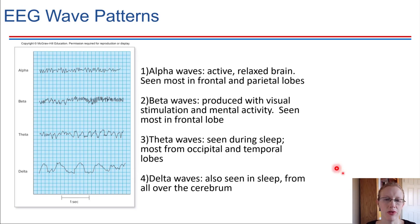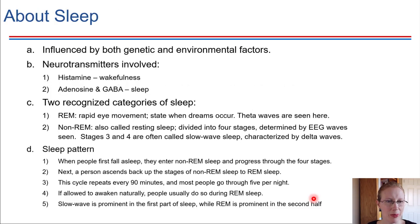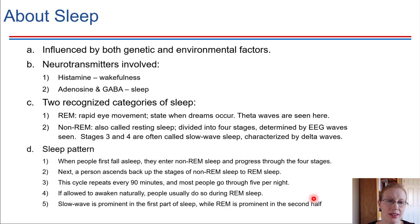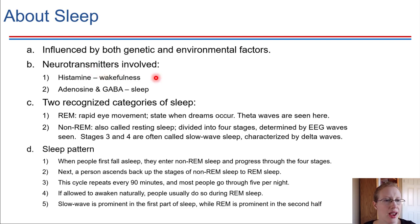Let's talk about sleep — theta and delta waves both happen during sleep. Sleep involves neurotransmitters: particularly histamine, which promotes wakefulness, and adenosine and GABA, which help to promote sleep.